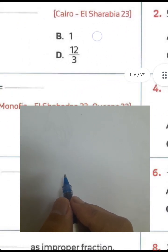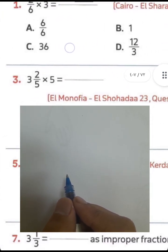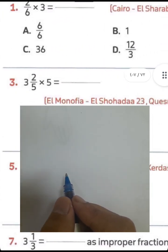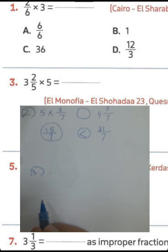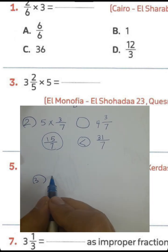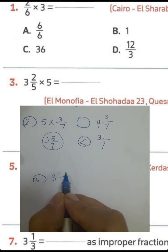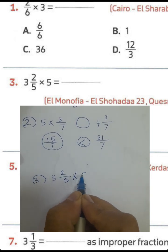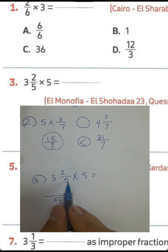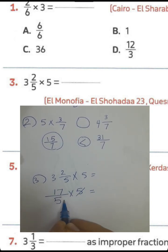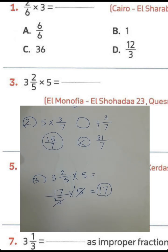Question number 3: 3 and 2 over 5 times 5. Convert first — 3 times 5 equals 15, plus 2 equals 17, times 5. Then 5 divided by 5 equals 1, and 1 times 17 equals 17.